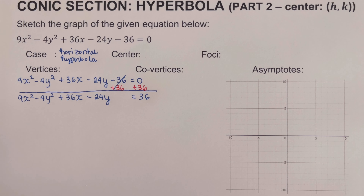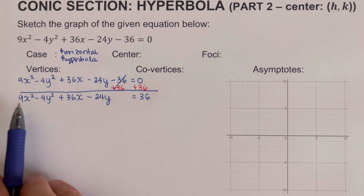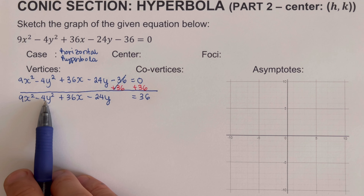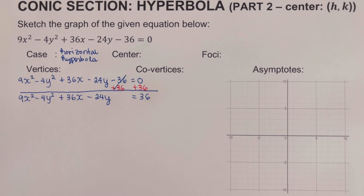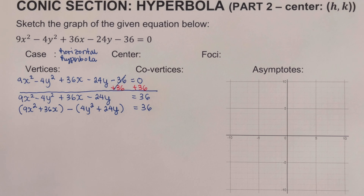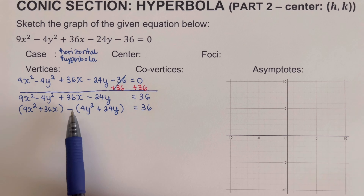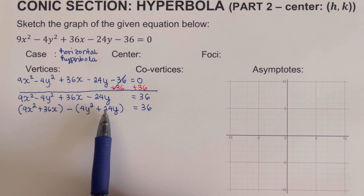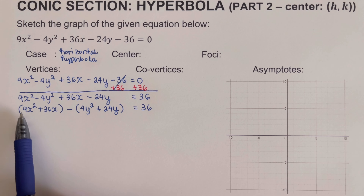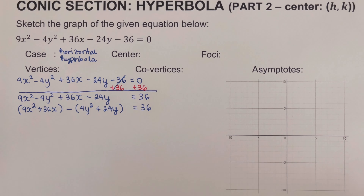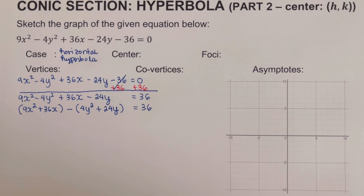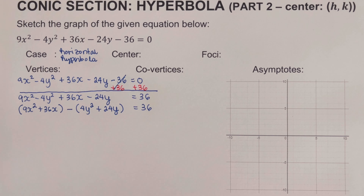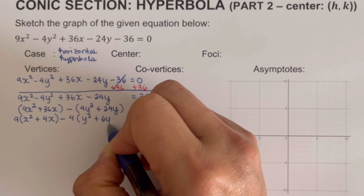Next, we group together all terms with x — that's 9x squared and 36x — and all terms with y — that's 4y squared and negative 24y. We factor out the common factor from each group: 9 from the x group and 4 from the y group. Distributing the negative gives us negative 4y squared and positive 24y for the y group.